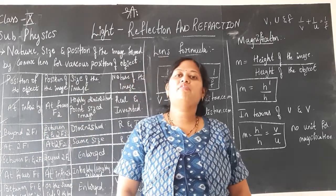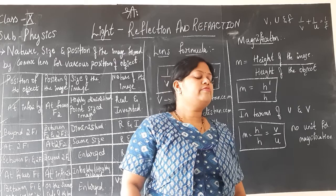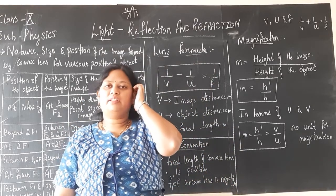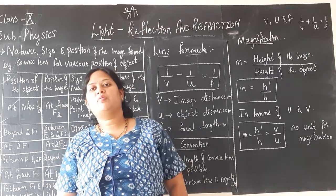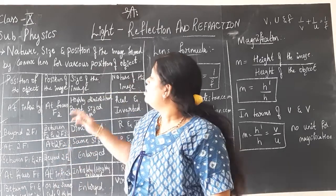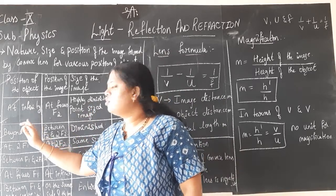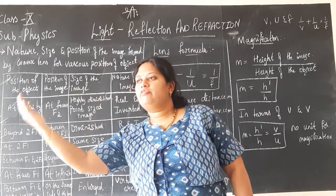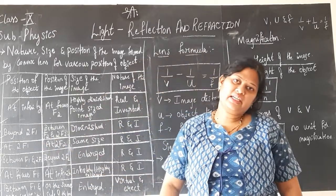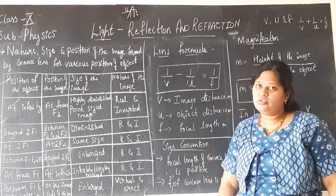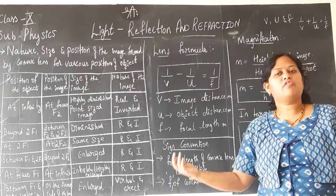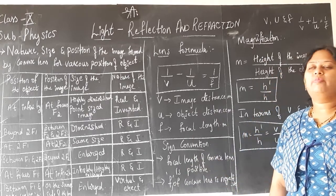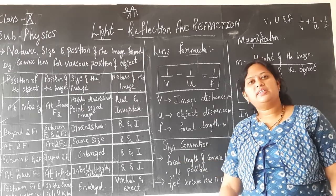This will help you when you solve numerical problems. When a problem says convex lens, write the focal length as positive. When it says concave lens, write the focal length as negative. Always remember: the principal focus distance from the optical center is the focal length — convex lens focal length is positive, concave lens focal length is negative.